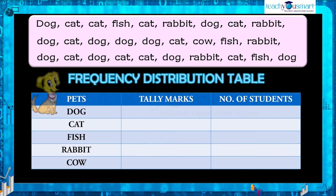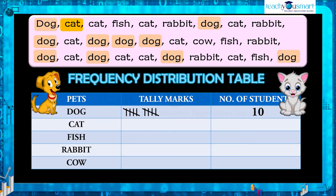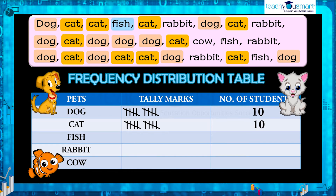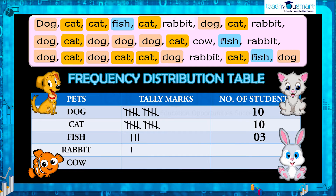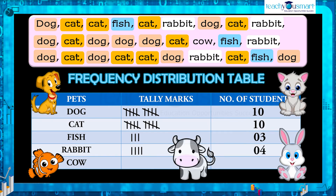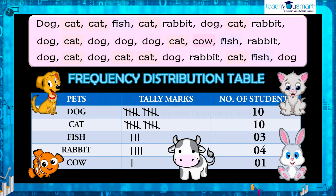Make a frequency distribution table for the same. Number of students who like dogs is nine. Number of students who like cats is ten. Number of students who like fish is three. Number of students who like rabbits is four. The number of students who like cows is only one. Now we get the frequency distribution table.